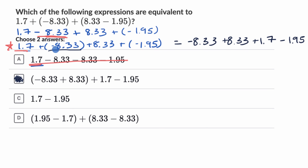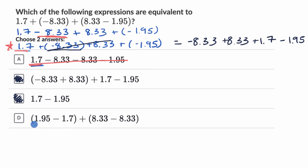Now this next choice: if you cancel the two matching terms out, you're left with 1.7 plus negative 1.95, which is the same as minus 1.95. So I like this choice as well. As for the last one — they're trying to change the order, but they have positive 1.95 instead of negative, and they're subtracting 1.7, which there's no reason to do. So this last one is definitely not equivalent.